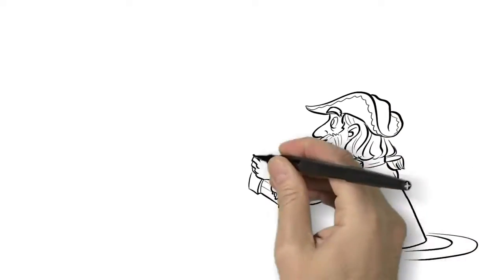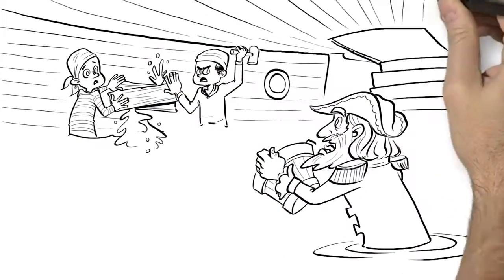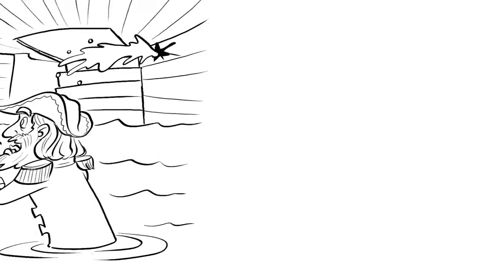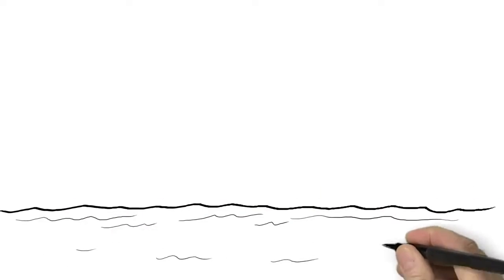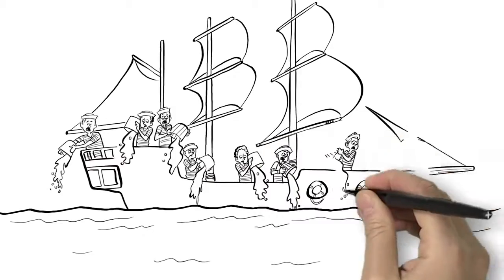To stay on schedule, many captains instead shift crew from repairing and strengthening the hull to bailing. But less repair work eventually causes more leaks. The crew gets stuck in a vicious cycle in which the urgent need to bail cuts investments in leak prevention.